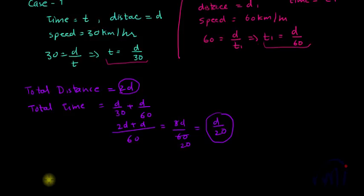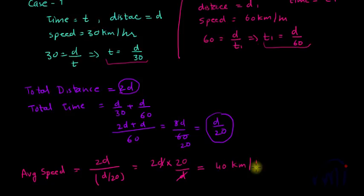So the average speed will be equal to total distance which is 2D divided by total time taken which is D by 20. Or this can be written as 2D multiplied by the reciprocal of denominator which is 20 by D. And this D will cancel this D. And the average speed will be 20 multiplied by 2 which is 40 kilometers per hour.